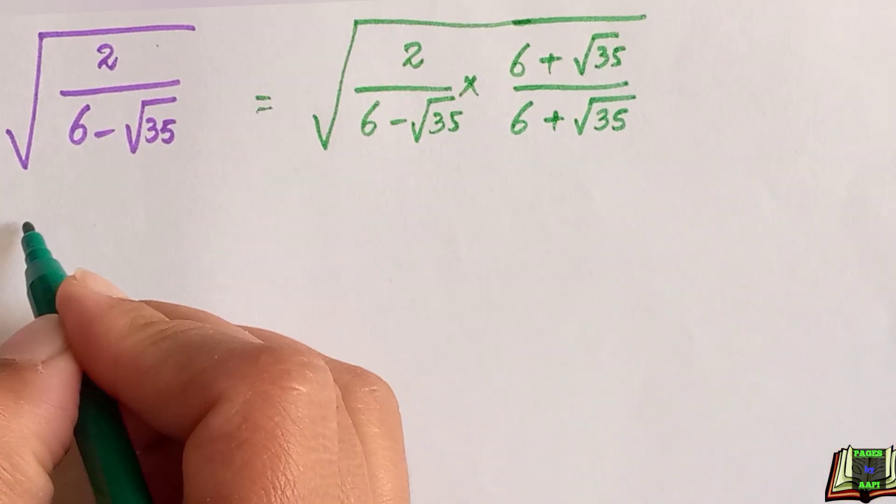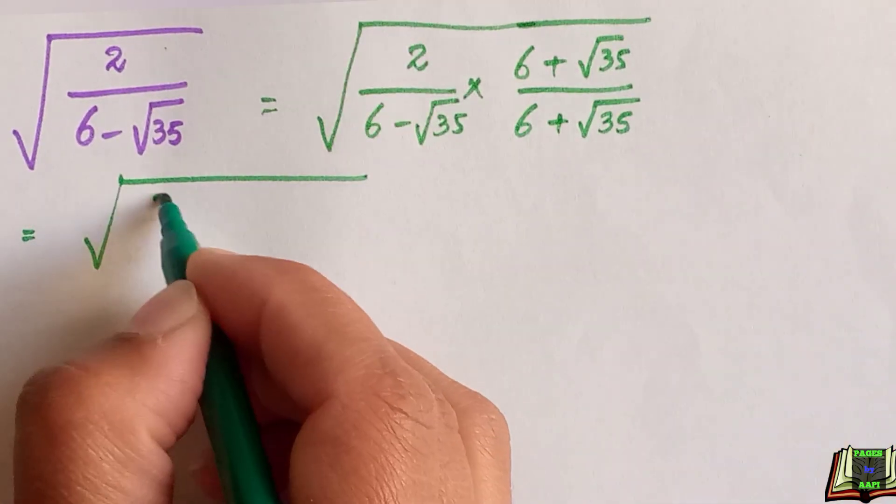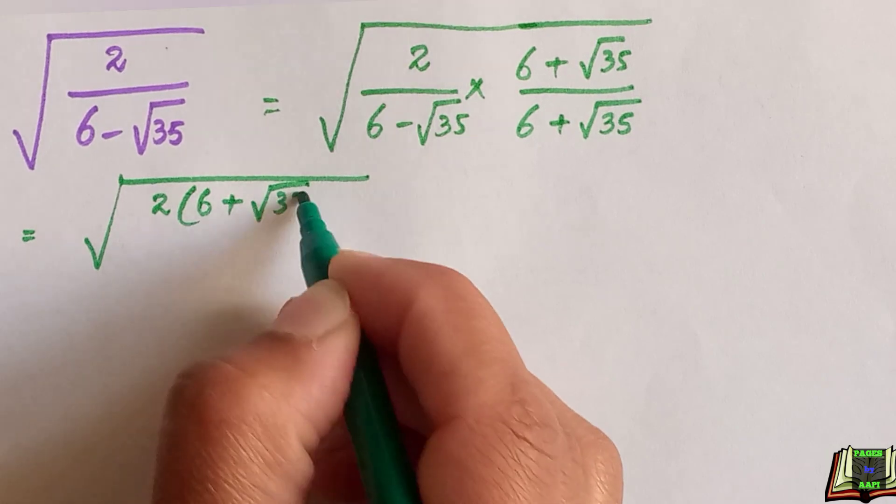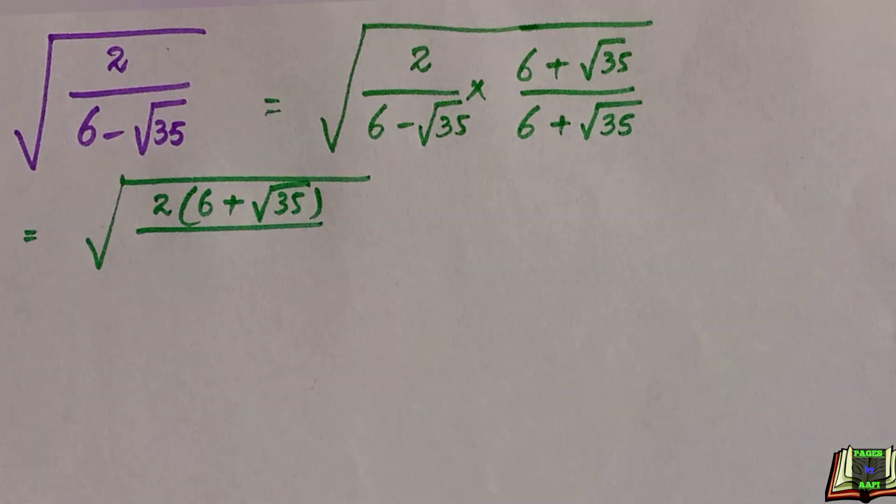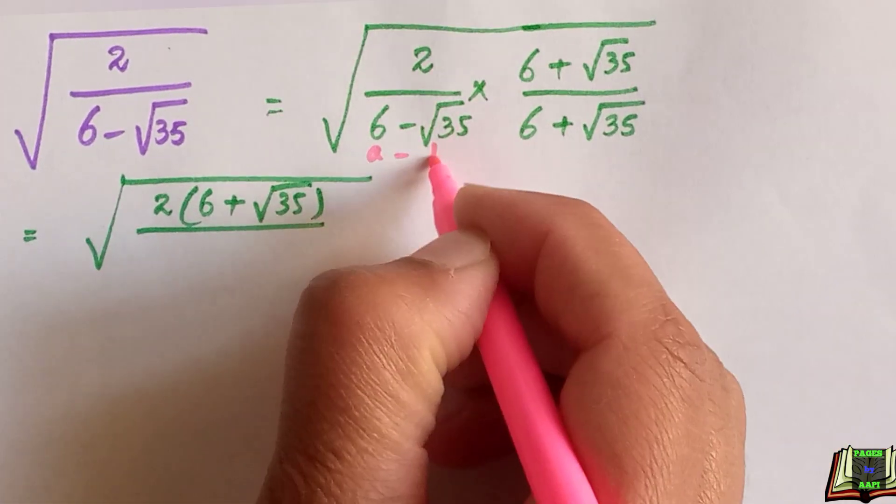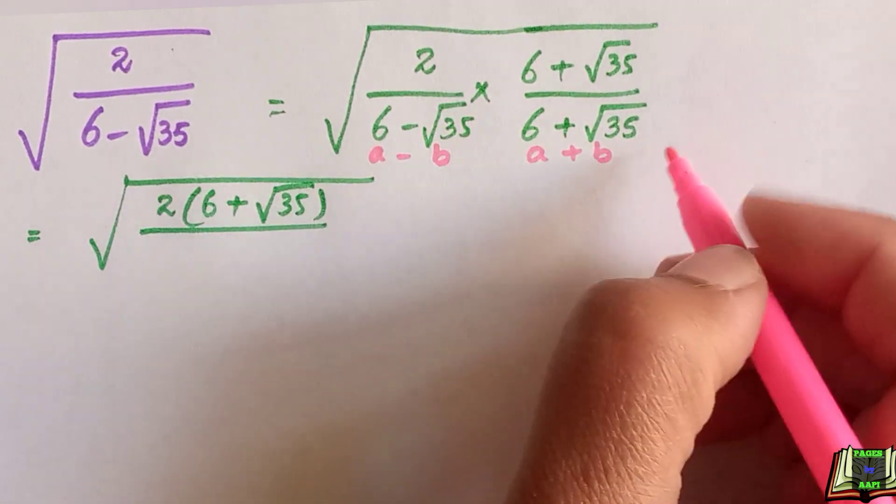In the next step we will multiply this 2 by 6 plus root 35 in the numerator. And in the denominator, let's suppose this 6 as a and this root 35 as b.